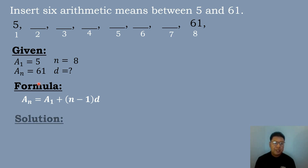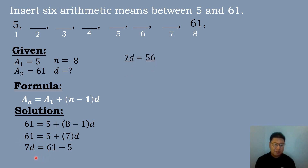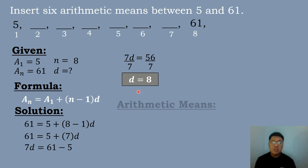We will substitute the values: a sub n equals 61, equals the first term 5, plus quantity 8 minus 1 times d. So 61 equals 5 plus 7d. Transposing 5: 61 minus 5 equals 7d, so 56 equals 7d. Dividing both sides by 7, 56 divided by 7 equals 8. So the common difference is equal to 8.